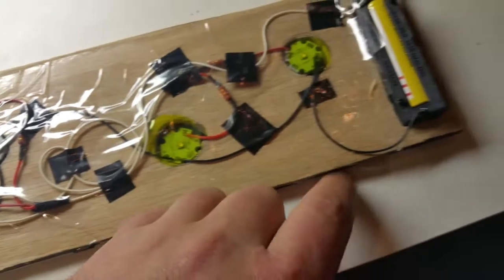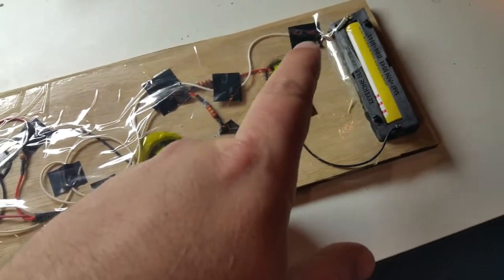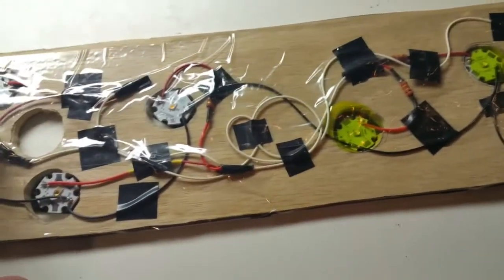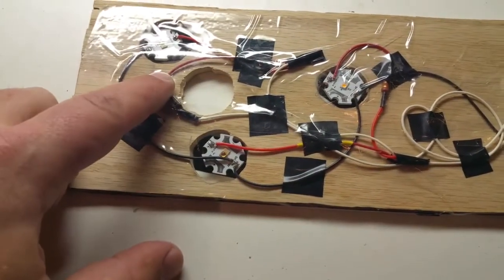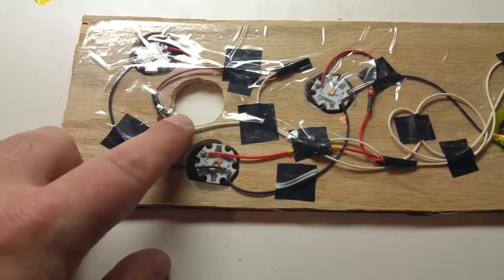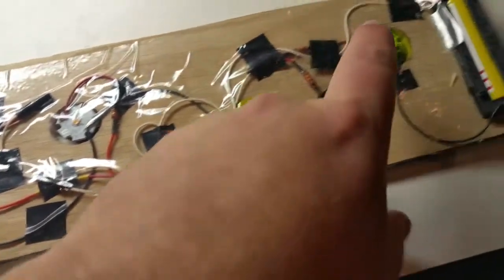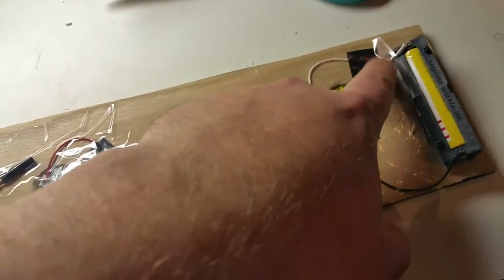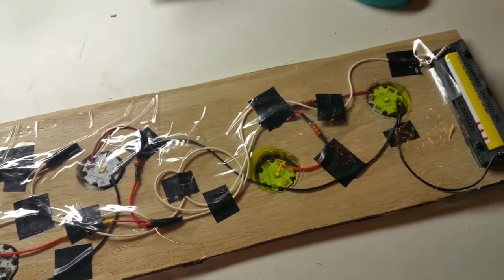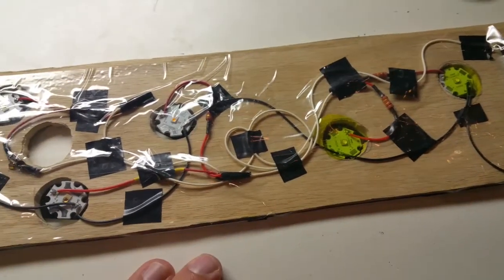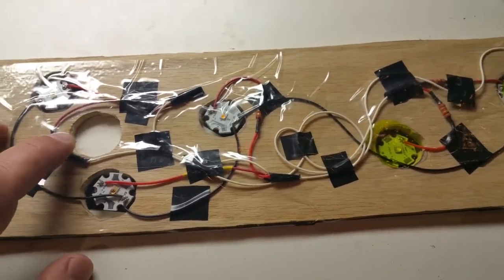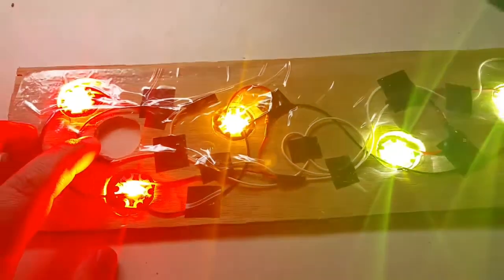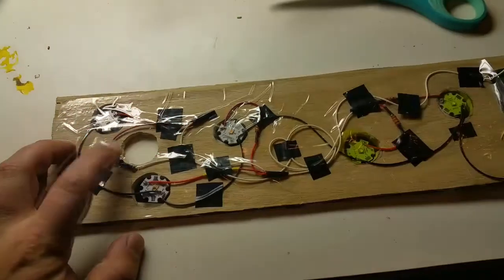Then just link all the negative wires from the LEDs which runs to the battery. One part is that all the LEDs linked together - you got to go to one side of the switch, and then the other side of the switch which is this white wire goes all the way over to the positive for the battery.